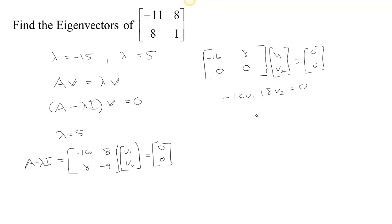If I solve for V2, 8 V2 has to be equal to 16 V1, so V2 just has to be 2 times V1. So any vector, like let's say we take V1 to be 1, then V2 has to just be twice that. This is one eigenvector that's associated with lambda equals 5. But you could do any other vector as long as it was a scalar multiple of this. So if I chose V1 to be 5, then V2 would have to be 10. These are all eigenvectors that correspond to lambda equal 5.